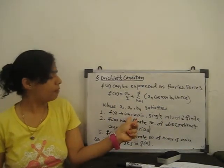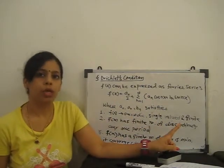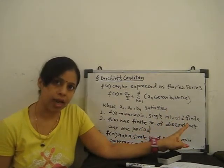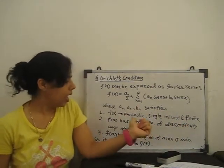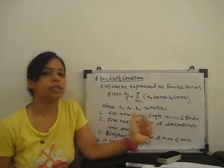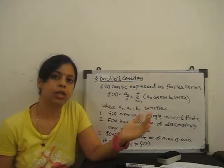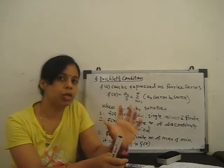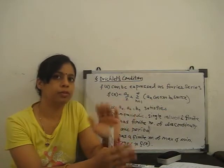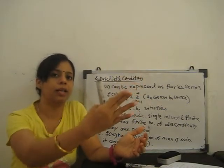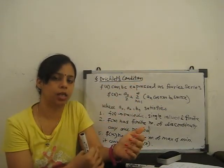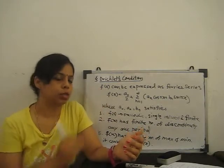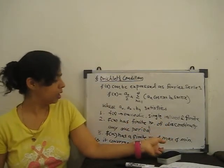Condition 1: f(x) is periodic, single-valued, and a finite function. Condition 2: f(x) has a finite number of discontinuities in one period. There must be countable discontinuities — we cannot say it is infinite discontinuity. If it is infinite, we can't find the Fourier series. So, finite number of discontinuities.